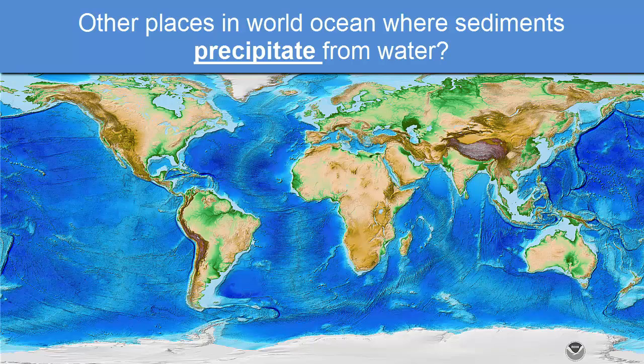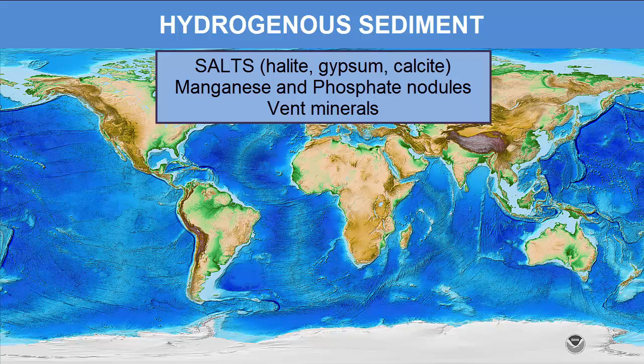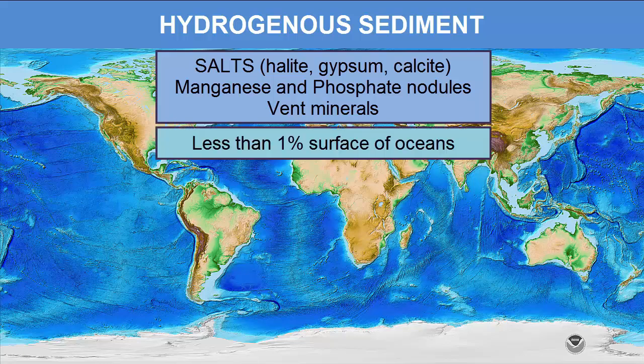Another place where sediment precipitates from solution is hydrothermal vents. Hot waters rich in dissolved ions leached from the ocean crust enter the colder seawater. As that hot water cools, it becomes supersaturated with dissolved ions, since cold water can dissolve less than warm water — that's why we heat water when dissolving sugar or salt in cooking. Hydrogenous sediments are found in many places across the oceans, but they represent less than 1% of the surface area as they are largely scattered.